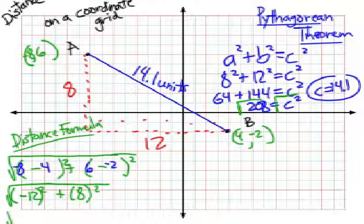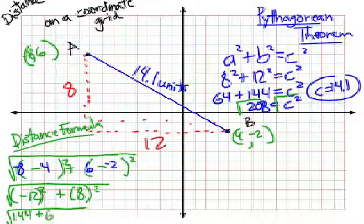Notice that as we keep going, we'd have 144 plus 64 in my radical. That would be, again, the square root of 208. Notice, similar to what we got using the Pythagorean theorem. And the answer, again, would be about 14.1.